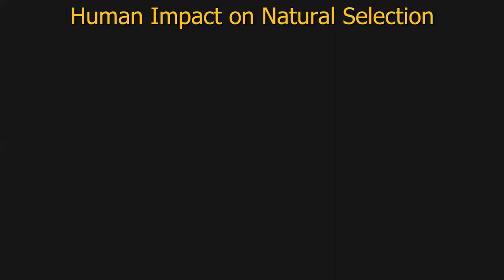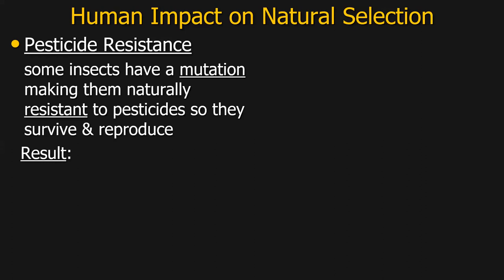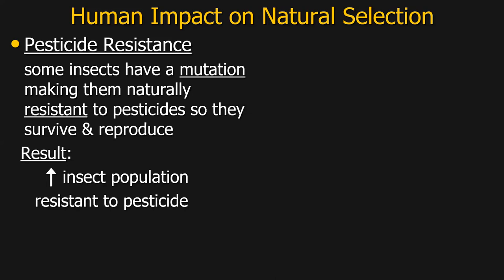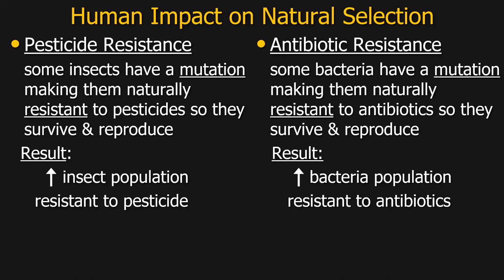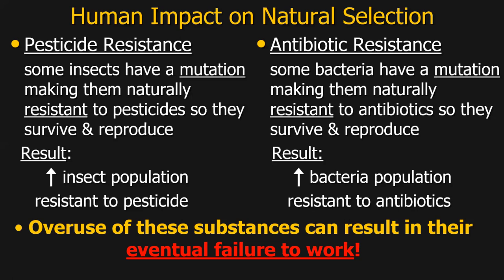This is also happening with bacteria becoming resistant to our antibiotic medication. We are increasing pesticide resistance and antibiotic resistance by simply using them more. The more we use them, the more we're killing organisms that are not resistant. But if an organism is resistant, it survives, it reproduces, and you're going to end up seeing more of those resistant organisms. We're changing the environment by adding these drugs and pesticides. But we're also helping anyone that happens to be resistant survive — we're making them have an advantage. Overusing pesticides and antibiotics can actually lead to them eventually failing to work because populations become resistant. It's just a natural process of evolution and they pass that resistance on.